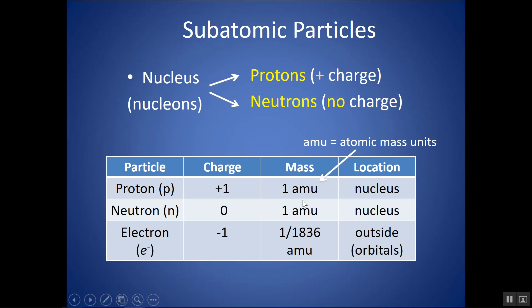The protons and neutrons weigh approximately the same amount — they each weigh one AMU, or one atomic mass unit. This is a very small unit since these are very small particles. There are about 6.022 times 10 to the 23rd AMU in a gram. Notice that the electron's mass is even smaller — about 1/1836th of a proton or neutron — so an electron has negligible mass.